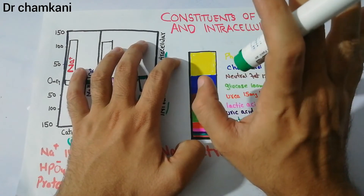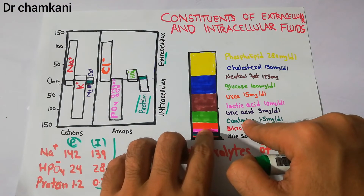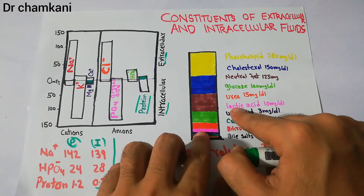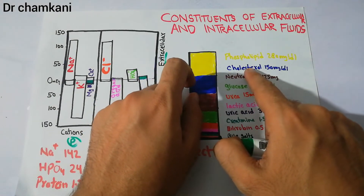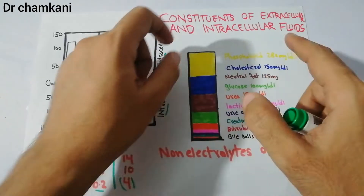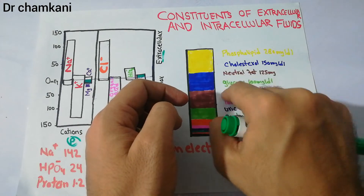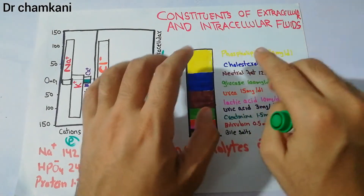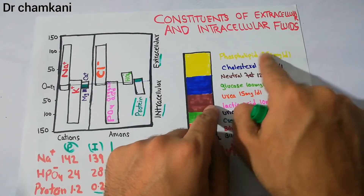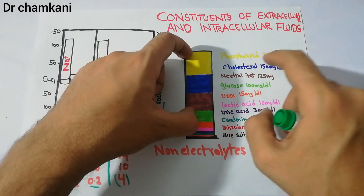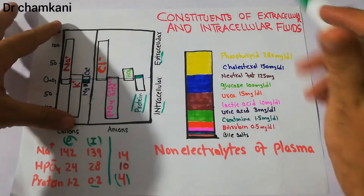Apart from electrolytes, there are also many non-electrolytes in the plasma. These include small amounts of bile salts, bilirubin, creatinine, uric acid, and lactic acid, slightly higher amounts of urea and glucose, a large amount of cholesterol, and a very large amount of phospholipids. The graph shows their quantities: phospholipids and cholesterol occupy a large portion of non-electrolytes, while uric acid, creatinine, bilirubin, and bile acids occupy only a small portion.